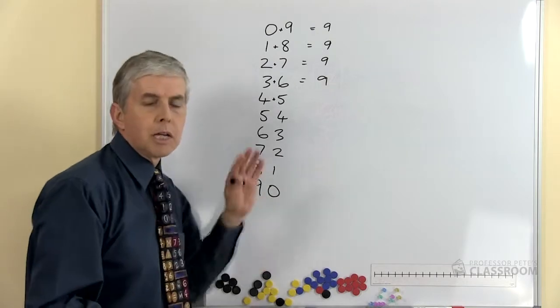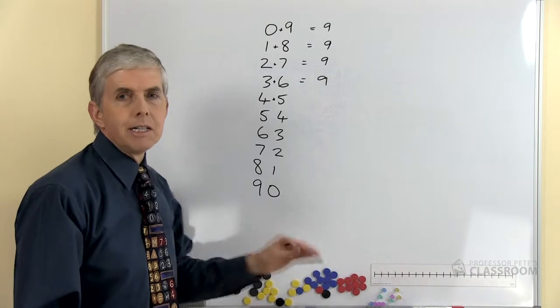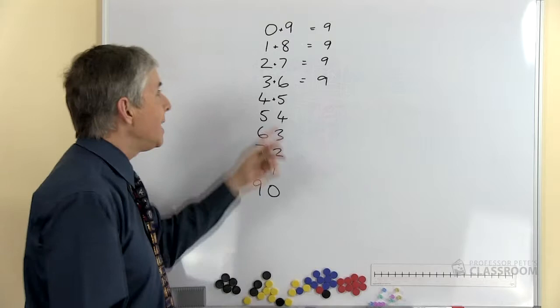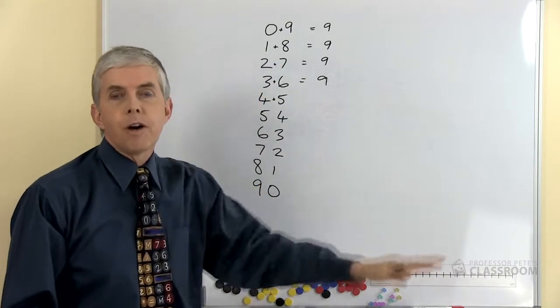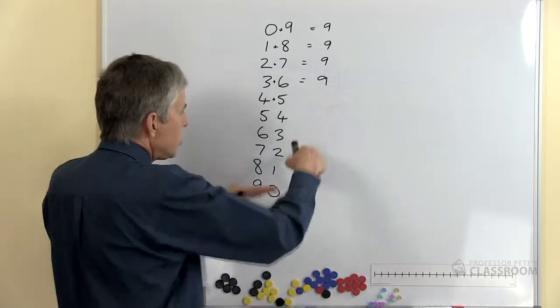Now there are other multiples later on. If you're wondering what happens beyond ninety, well the next one is ninety-nine, and the sum of those digits, nine plus nine, is eighteen. But eighteen is still a multiple of nine, so you'll find that however far you go with the nine times tables they will always be a multiple of nine. But for now we're just looking at this.